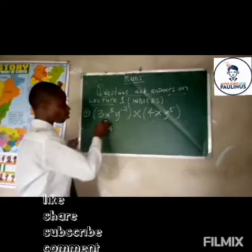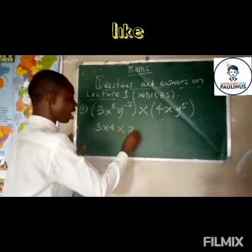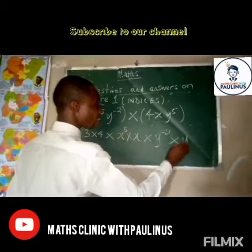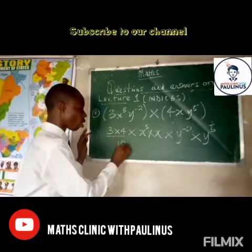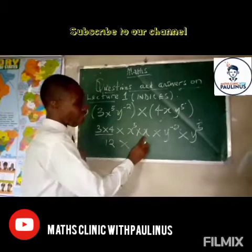I'm going to have three by four — that part is straightforward, number to number. Then I'm going to have x to x: it's x raised to power five times x — ordinary x, which is raised to power one. Then I have y raised to power minus two times y raised to power five. Now, three times four is twelve. When a quantity has no written exponent, it is raised to the power of one, so let's add one to it.